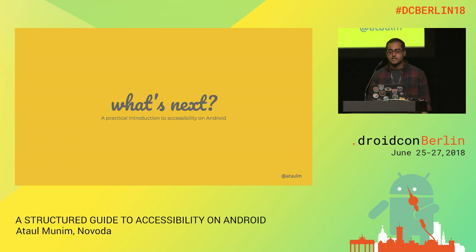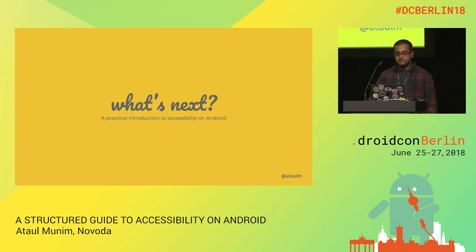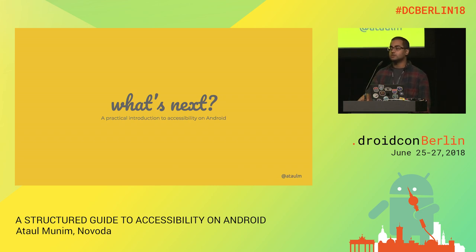I've been doing accessibility on Android since 2015, starting on a newspaper app called The Times and Sunday Times. Since then, I've moved on to another product called Channel 4, which is similar to a TV on-demand app. And it's really nice seeing over the last three or four years meet-up organizers and conference committees accepting and considering accessibility talks or talks about inclusive design — like Mitchell in the front row was speaking yesterday at the bar camp about accessibility, which is cool.